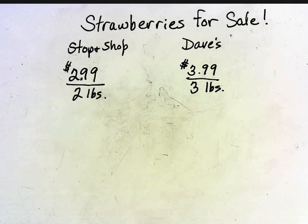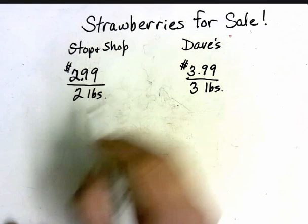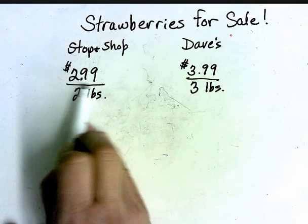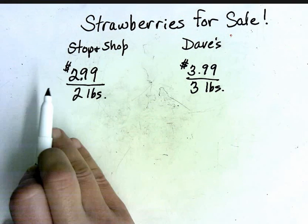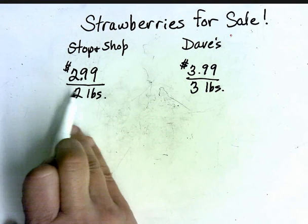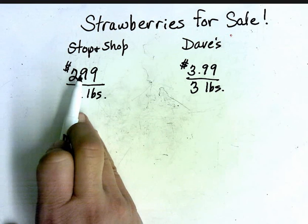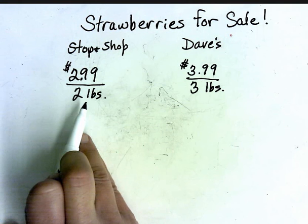Stop and Shop I'm going to do by hand. Now, this is a division symbol — it's a fraction symbol, but it means divide. It means $2.99 divided by two pounds is how I'm going to find out how much it costs per pound.